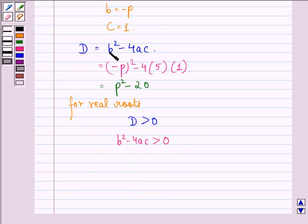We have just found out that b² - 4ac is equal to p² - 20. So we have p² - 20 > 0.